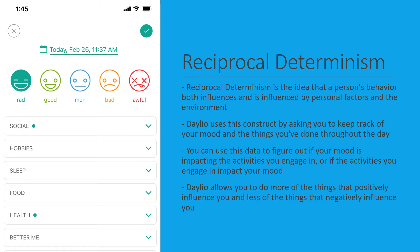reciprocal determinism is the idea that a person's behavior both influences and is influenced by personal factors in the environment. This is a very good example in the Dalio app because the main thing that it focuses on is mood and